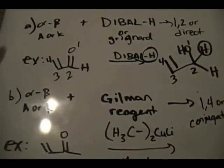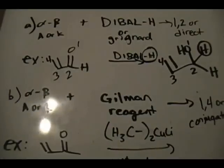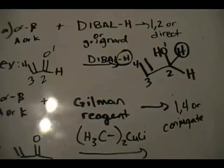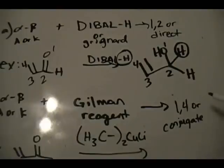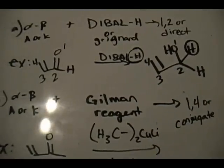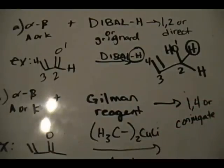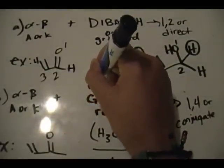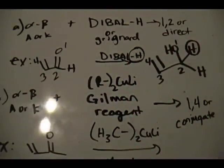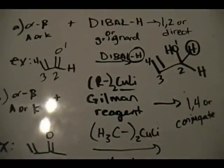In the second case, you have an alpha-beta unsaturated aldehyde or ketone reacting with the Gilman reagent, and you form the 1,4 product — also known as the conjugate product. The group from the reagent is attached to the fourth position, hence the name 1,4. The generic Gilman reagent is written as R₂CuLi — it's an organometallic reagent with an organic R group and a copper-lithium metallic group.